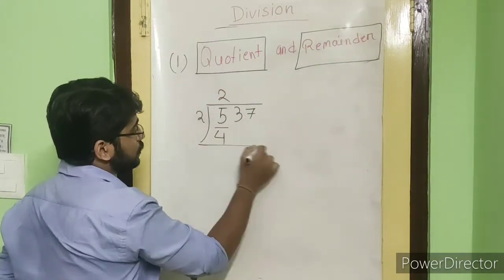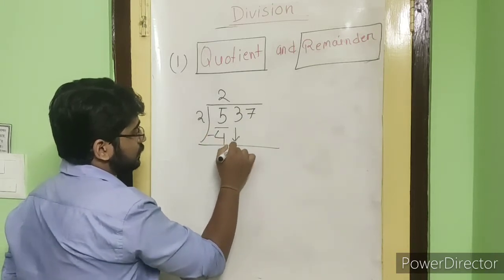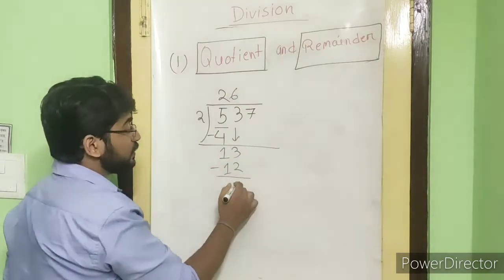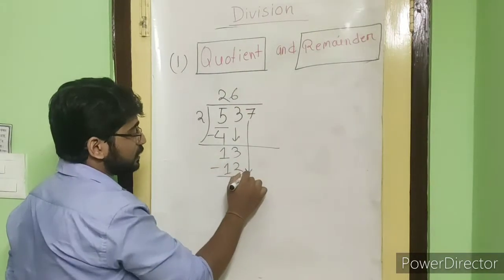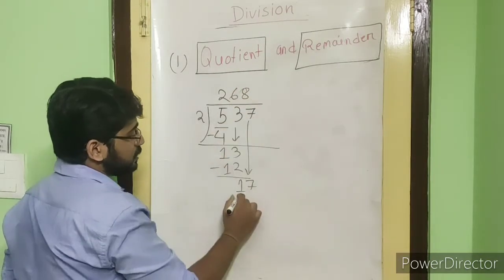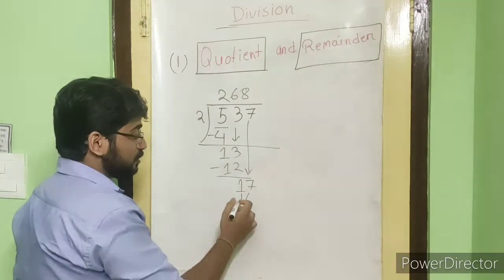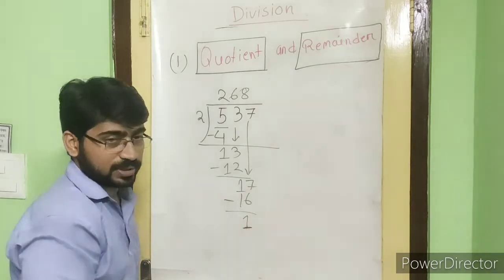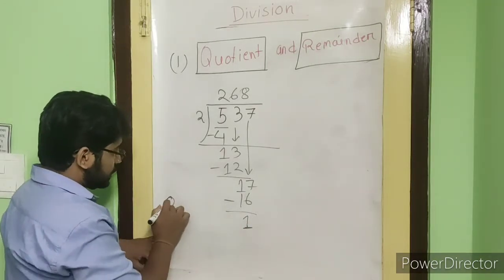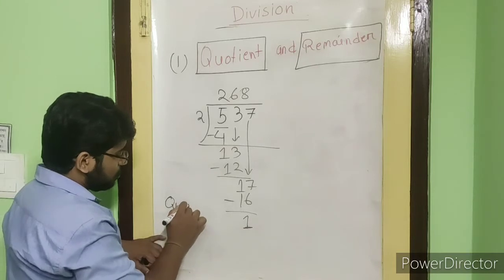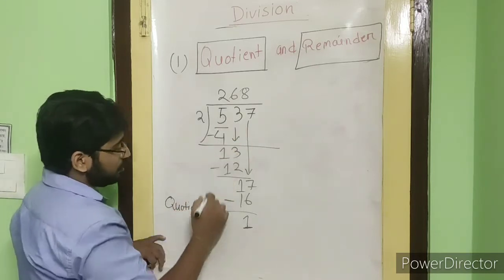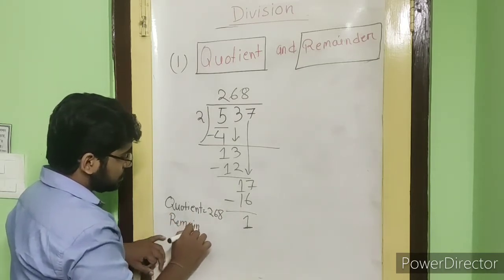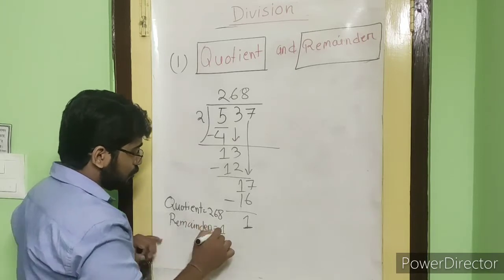Now let's do the calculation. According to the rule: 2 into 4 is 4 — 5 minus 4 is 1. After that comes 3 — 6 into 2 is 12 — 13 minus 12 is 1. After that 7 comes — 8 into 2 is 16 — 17 minus 16 is 1. So the remainder is 1. Therefore, the quotient equals 268 and the remainder equals 1.